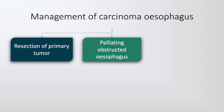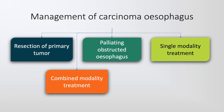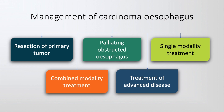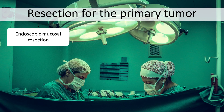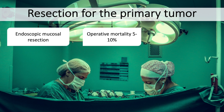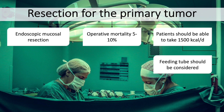The management of esophageal cancer consists of resection of the primary tumor, palliating the obstructed esophagus, single modality treatment, combined modality treatment, and treatment of advanced disease. Resection of the primary tumor consists of endoscopic mucosal resection, which carries an operative mortality of 5-10%, and patients should be able to take about 1500 kcal per day; if not, a feeding tube may be considered.